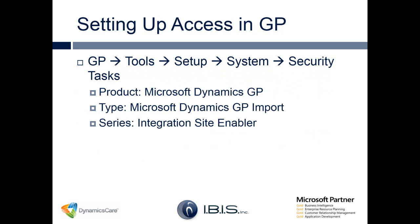To make sure that you have access to the integration site enabler, go to GP, Tools, Setup, System, and Security Task. For the product, select Microsoft Dynamics GP. For the type, Microsoft Dynamics GP Import. And the series, select Integration Site Enabler. Make sure that this Integration Site Enabler box is checked.